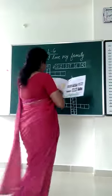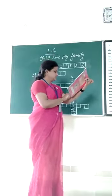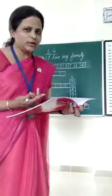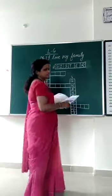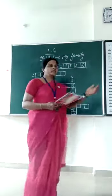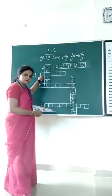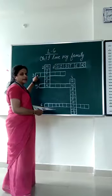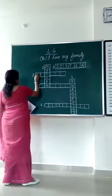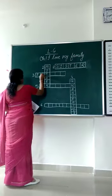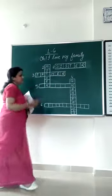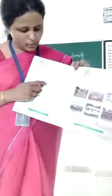Now come to number three. What is number three? He goes to office. Who goes to office? Father. Mother also goes to office, but here we use Mother for cooking food. So in this case we have to write Father. What is the spelling of Father? F-A-T-H-E-R. That is Father. In this place you have to write that.